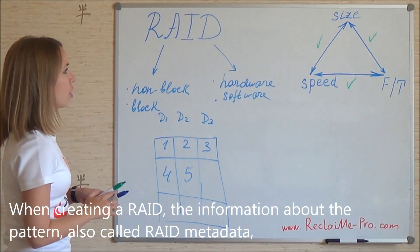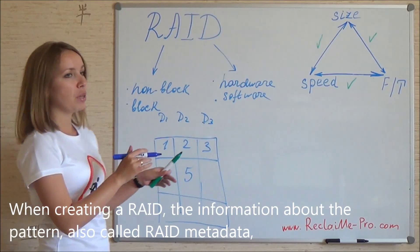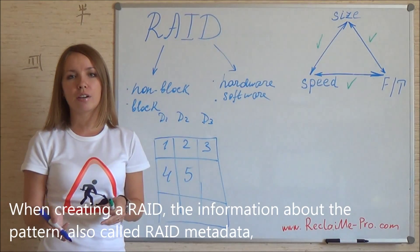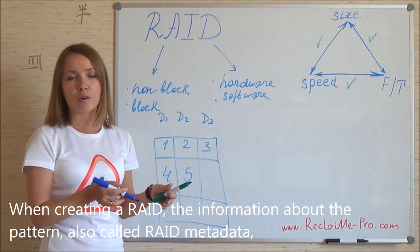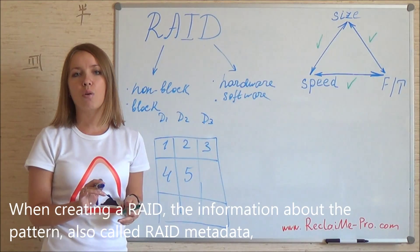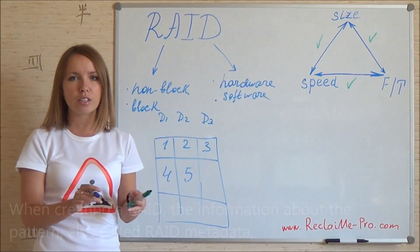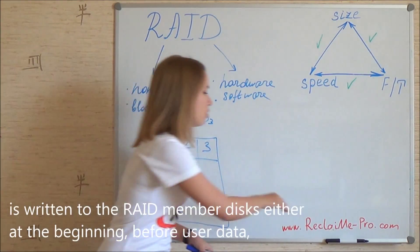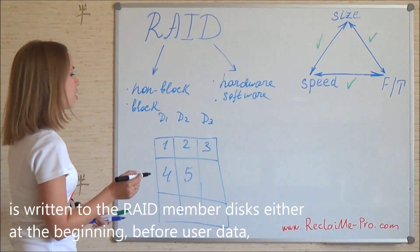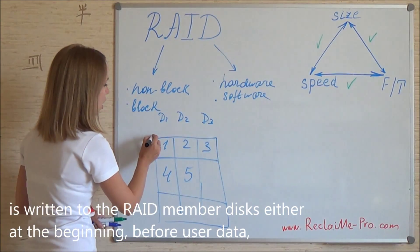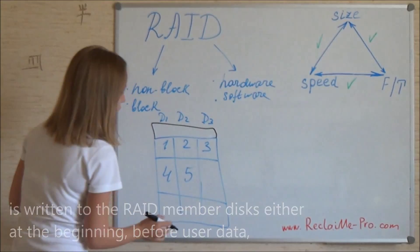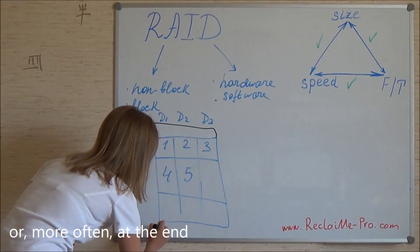When creating a RAID, be it hardware or software, the information about the pattern — also called RAID metadata — is written to the RAID member disks either at the beginning before user data, or more often at the end.